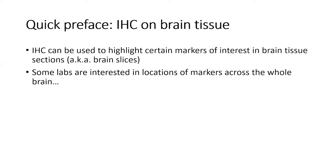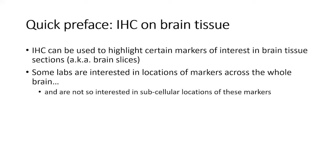I and other labs are interested in trying to find where in the brain these markers are — what specific brain regions, like the nucleus accumbens, the frontal cortex, or the occipital lobe. Some labs might not be concerned with knowing exactly where within a cell those markers are. I'm not concerned with things on the cellular level; I'm concerned with things on the whole brain and sub-region level.